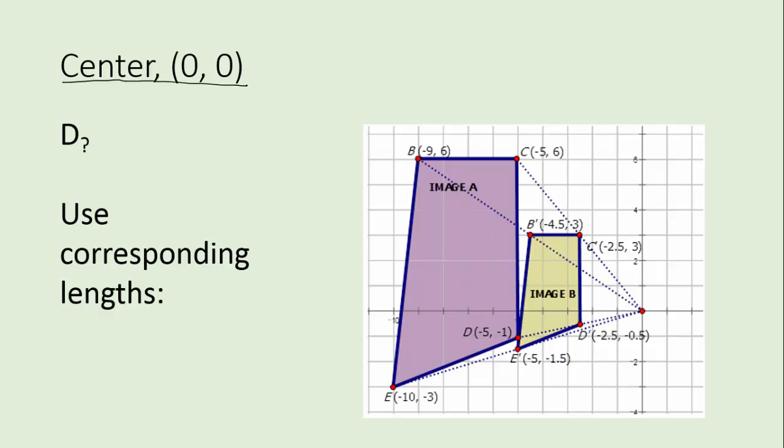In this case the question mark is where the scale factor goes. So that's what we're looking for and we're going to use corresponding lengths of sides. When you look at this figure the easiest sides would be the top edges of both figures because they're horizontal. So they lie right on a blue line and that's just going to be really easy to calculate. So let's use them.